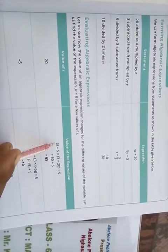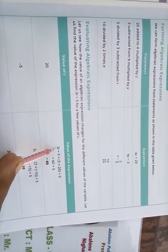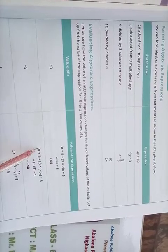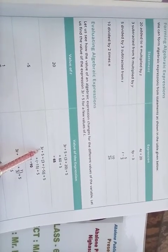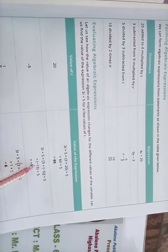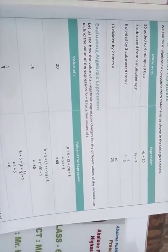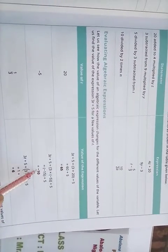Here, 3t plus 5. We should write the value of t is negative 5. 3 multiplied by negative 5 means negative 15, and plus 5. We know that minus 15 plus 5, we do the subtraction. Minus 15 plus 5, we get minus 10. Here is written minus 10. Clear?